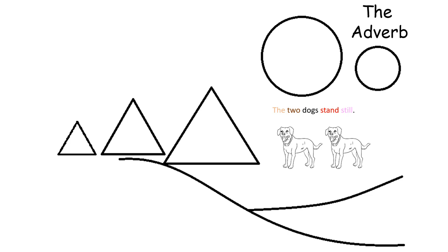You can see in the sentence, the two dogs stand still, that I have colored the word still pink. The word still describes how the dogs are standing. Therefore, the word still is an adverb.